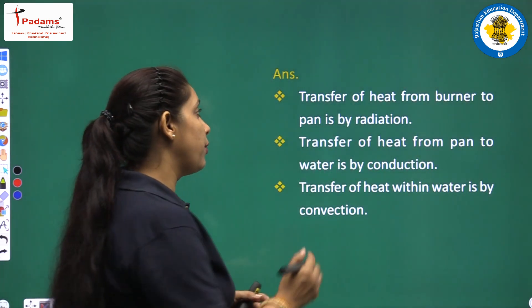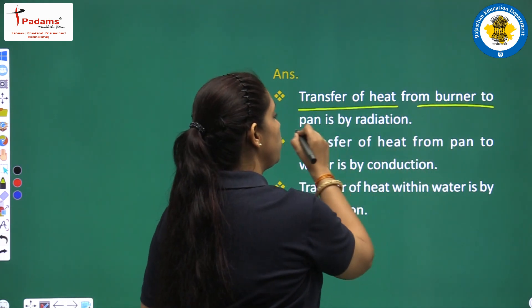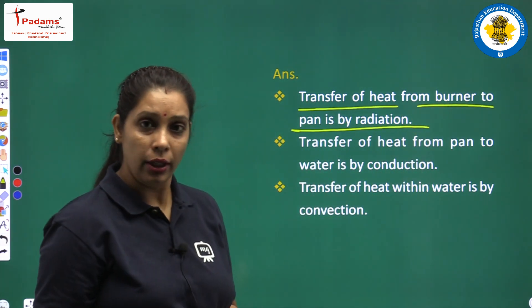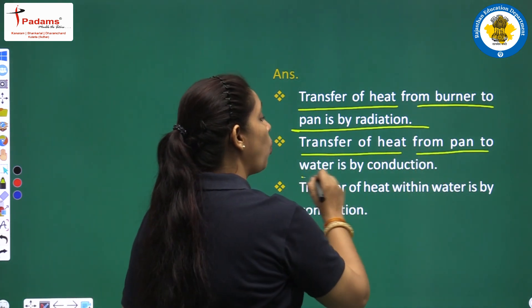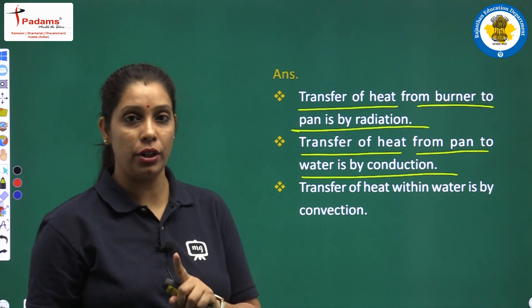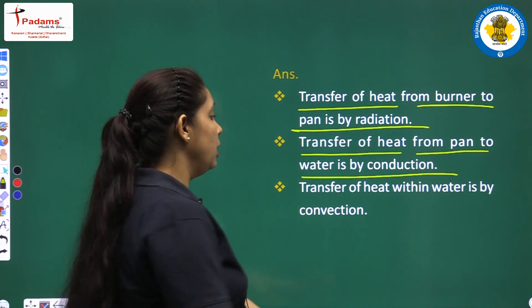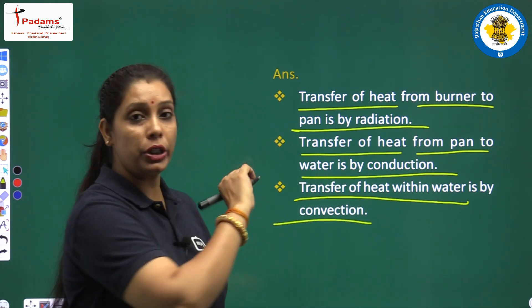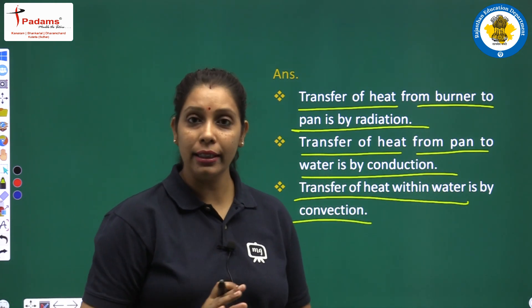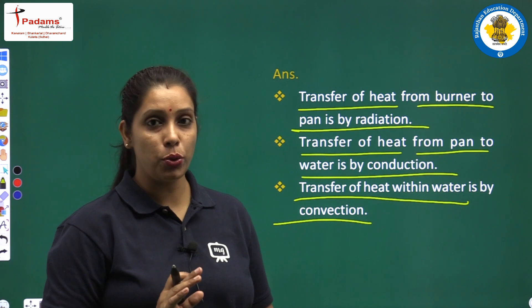I hope it is clear to everyone. We will write: transfer of heat from burner to pan is by radiation. Transfer of heat from pan to water is by conduction. And within water the transfer of heat is by convection.